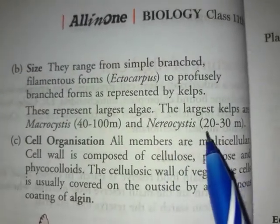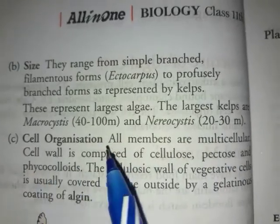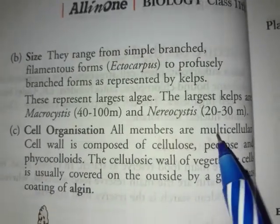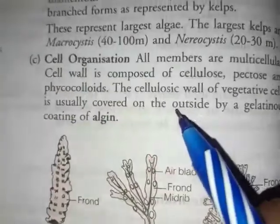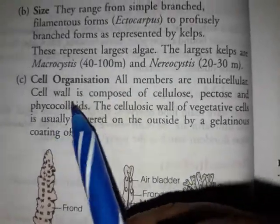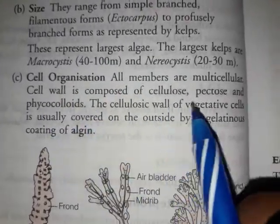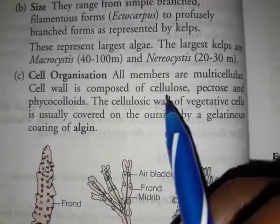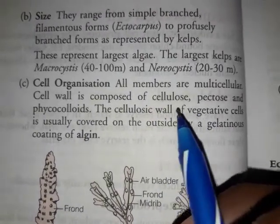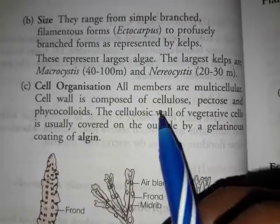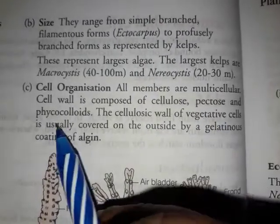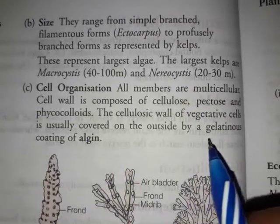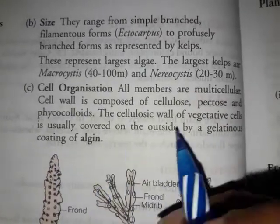Nereocystis is about 20 to 30 meters. All members are multicellular — unlike Chlorophyceae where some are unicellular. The cell wall is composed of cellulose, pectin, and phycocolloids. The inner cell wall is cellulose, pectin, and phycocolloid.